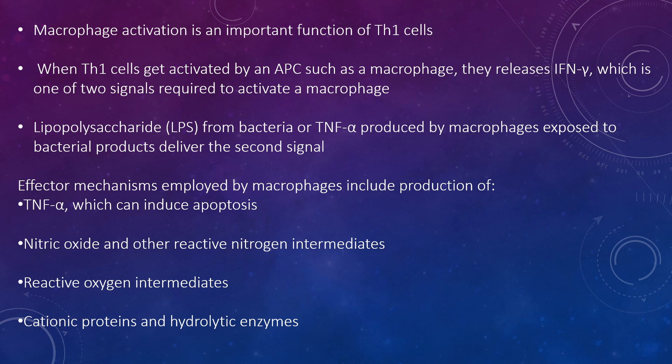Macrophage activation by Th1 cells is very important in protection against many different pathogens. For example, the bacterium Pneumocystis carinii, which is an intracellular pathogen, is controlled in normal individuals by activated macrophages. It is, however, a common cause of death in AIDS patients because they lack Th1 cells. Similarly, Mycobacterium tuberculosis, which is an intracellular pathogen that resides in vesicles, is not efficiently killed by macrophages unless they are activated. This is why tuberculosis infection is a problem in AIDS patients.